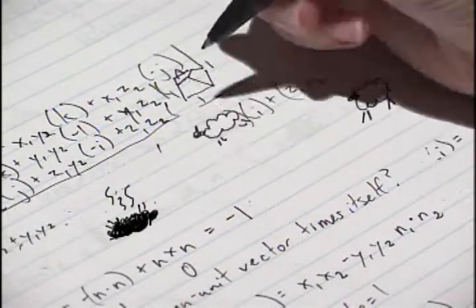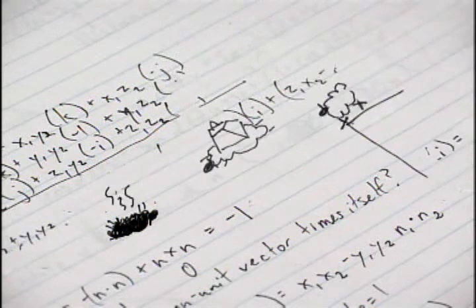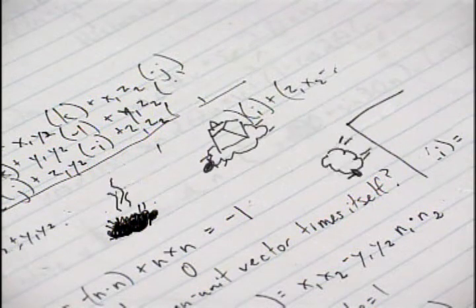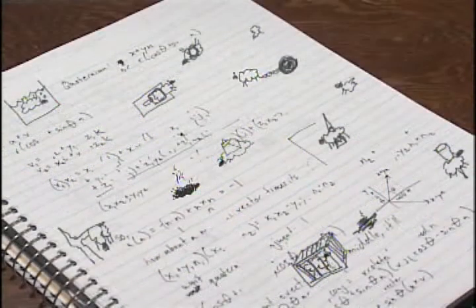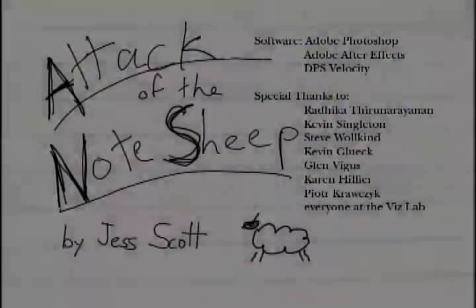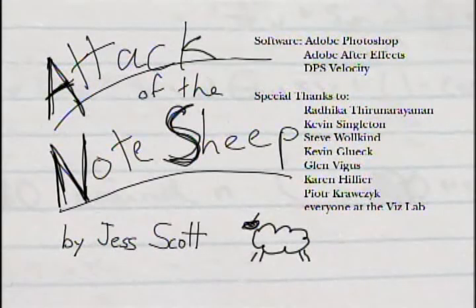Quaternion multiplication is quite simple once you realize these two facts, which will convert it into a rotation matrix. This is a standard algorithm and can be found in most of your textbooks.